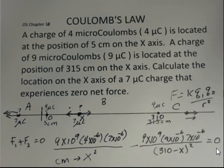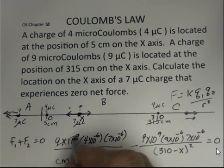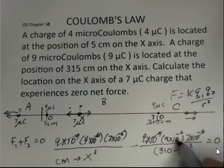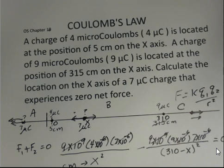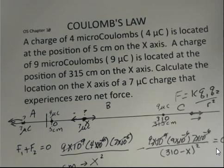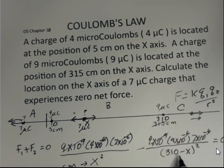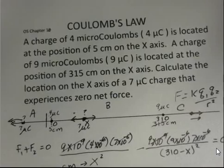X is the distance in centimeters from the 4 microcoulombs charge. Since everything equals 0, we can divide every term by 9 times 10 to the 9th, by 7 times 10 to the minus 6, and by 10 to the minus 6 to simplify. We end up with 4 over X squared minus 9 over the quantity 310 minus X, squared, equals 0. Note: it is illegal to write 310 squared minus X squared — the quantity 310 minus X must be squared as a whole.